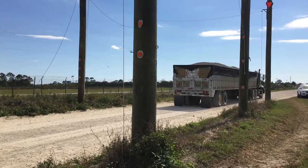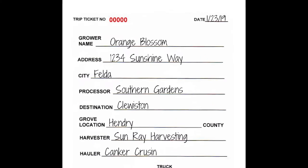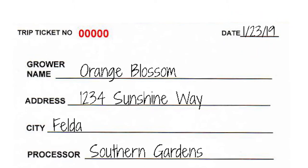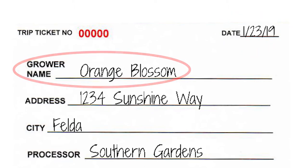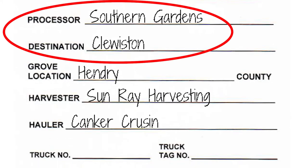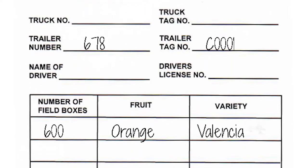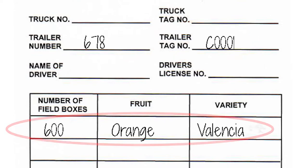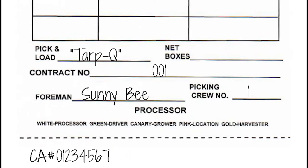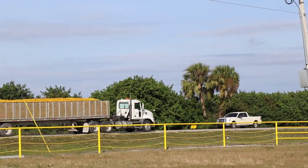The identity of each load of fruit must be maintained by issuing an individually numbered trip ticket containing the following information: date of harvest; the name of the grove landowner or agent, lessee, and/or harvester; processing plant or packing house to which the fruit is destined; the grove block or sub-block the fruit originated in; license tag number of trailer; number of field boxes; and the grower or caretaker compliance agreement number.